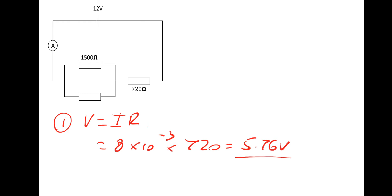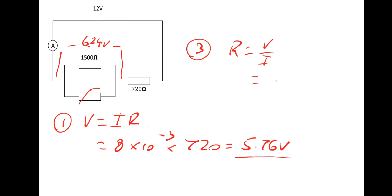The PD across the thermistor section is the supply voltage minus 5.76, giving 6.24 volts. Because the 1500-ohm resistor and thermistor are in parallel, both have 6.24 volts across them. The resistance of the parallel combination is V/I = 6.24 / (8 × 10⁻³) = 780 ohms.